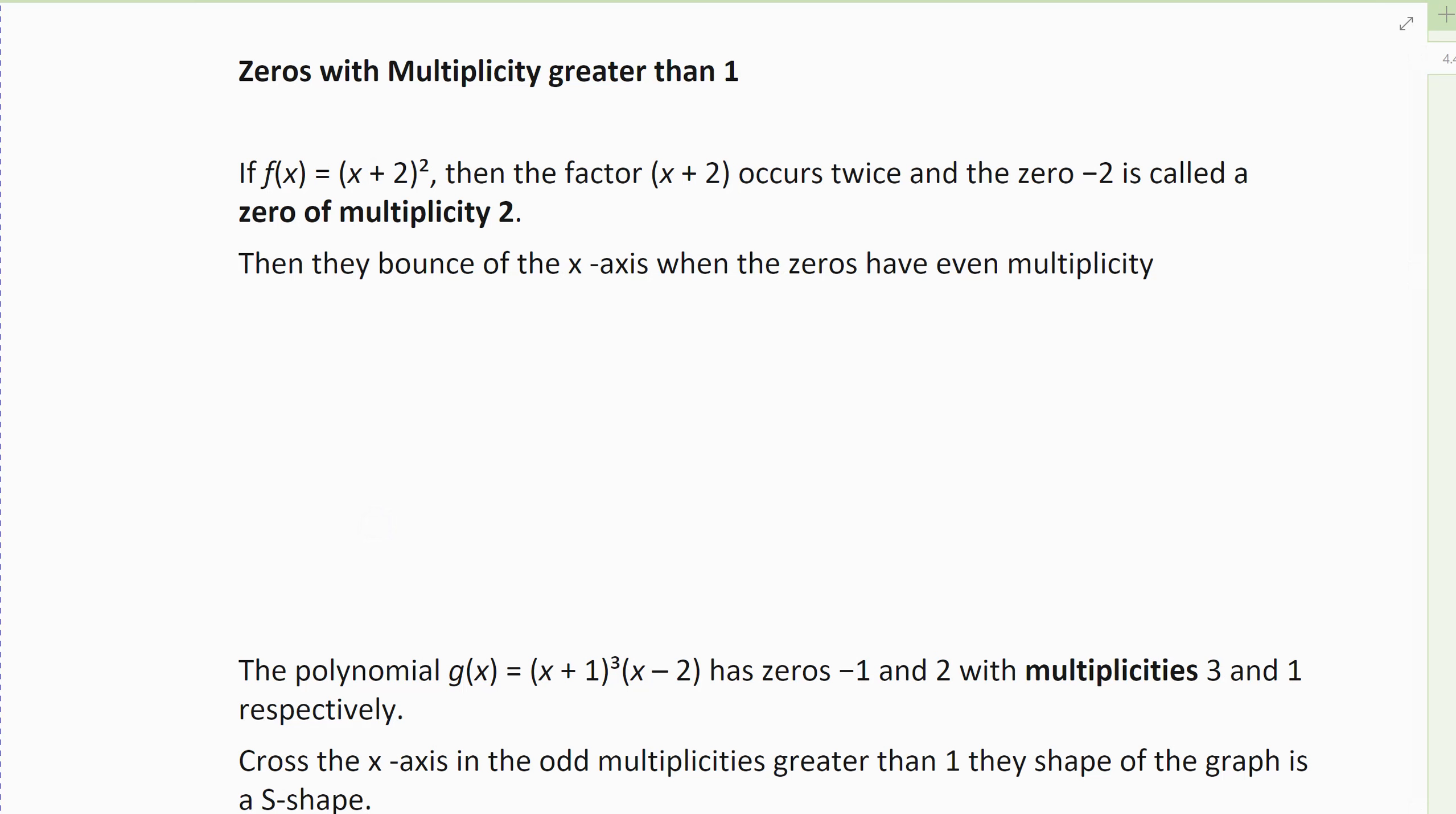So far, when we've used the factor theorem, all of my factors have had a multiplicity of one. Meaning there was only one group of that factor, there wasn't multiple groups of that factor. And so what we're going to talk about now is the multiplicity if we have zeros that actually show up in our factors more than once.